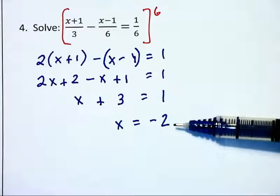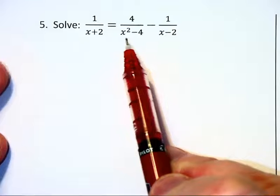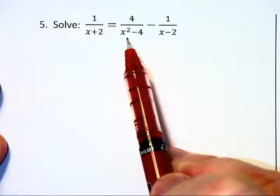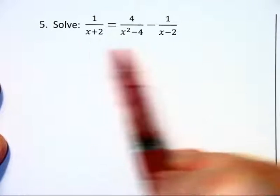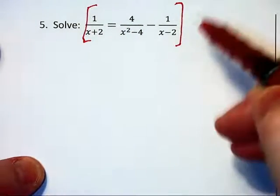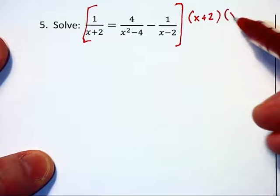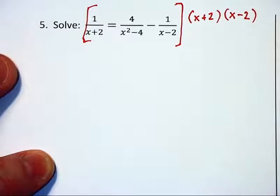For problem number 5, I notice that x squared minus 4 is the difference of two squares, which is the product of the other two denominators, and so the least common denominator that we're going to multiply through by to clear the fractions in this equation will be x plus 2 times x minus 2.